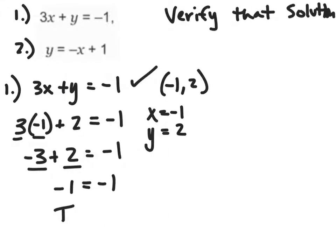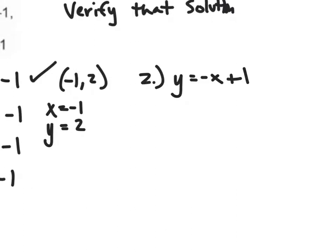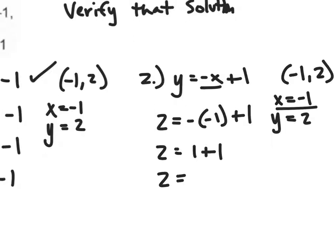Now I want to also verify the second equation: y equals negative x plus 1. I'm verifying that negative one comma two is my solution, so x equals negative 1 and y equals 2. Plugging in: 2 equals negative negative 1, plus 1. Subtracting a negative one makes it positive one, so I've got 1 plus 1, and 2 equals 2. That's a true statement, so that works out.